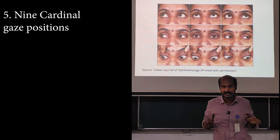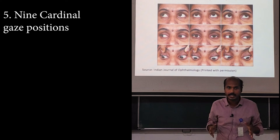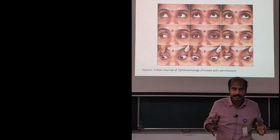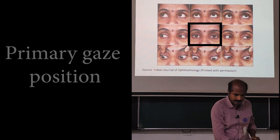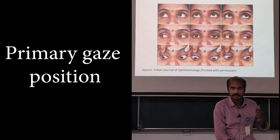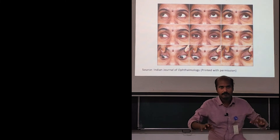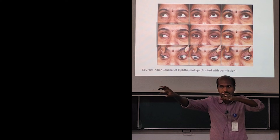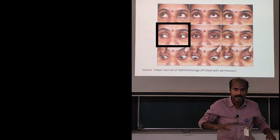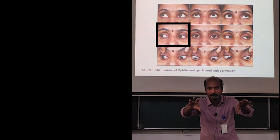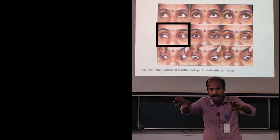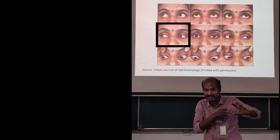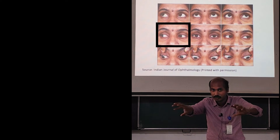Next, this is very important clinically. You need to understand the nine cardinal gaze positions, which you will use to test the patient's eye movements. In the center of those nine images, the patient is looking straight — that is the primary gaze position. From there, you can ask the patient to move to the other eight positions. When I ask the patient to look to the right, the right eyeball will be abducted and the left eyeball will be adducted. The muscles acting are the right lateral rectus and the left medial rectus — together causing rightward gaze.